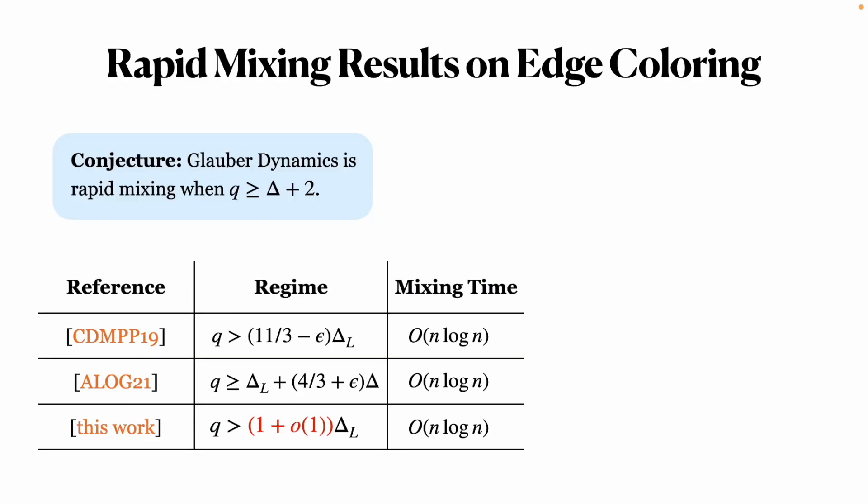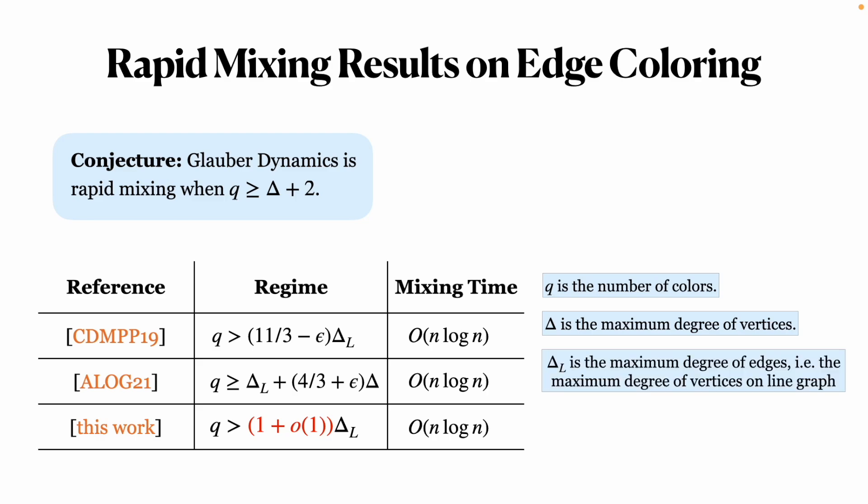There is a conjecture that Glauber dynamics is rapid mixing when the number of colors q is no less than delta plus 2.